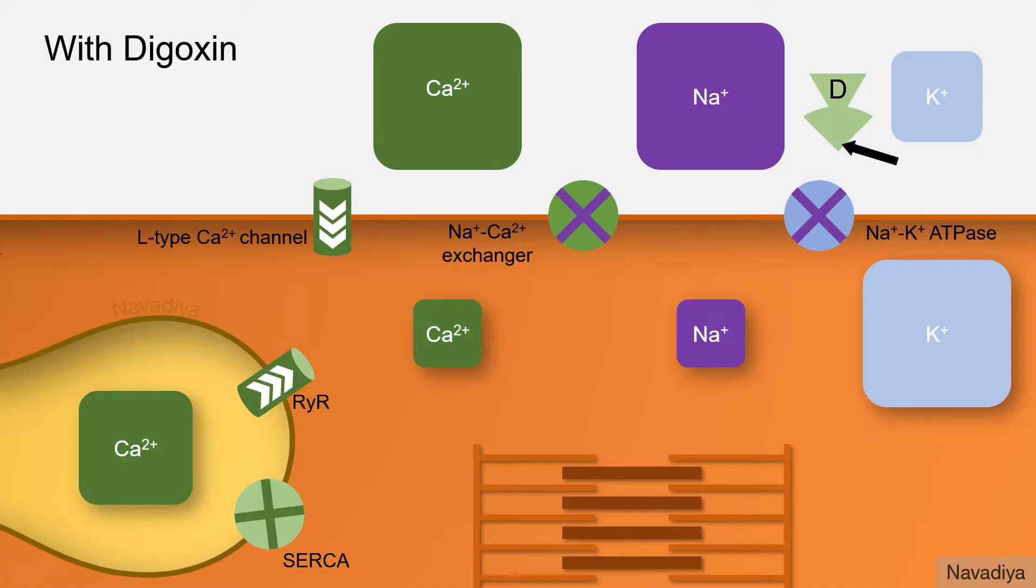Direct action of digoxin is on sodium potassium ATPase pump. Here it binds with potassium binding site and inhibits the activity of this pump. So now sodium is no longer extruded out of the cell and it gradually accumulates inside the cell.